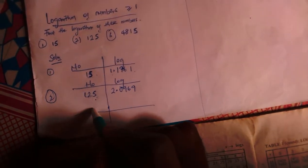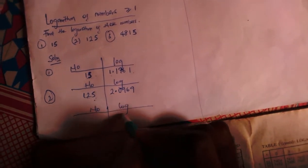Which means if I press 125, log 125 in my calculator, I will get 2 point 0969.